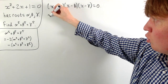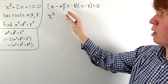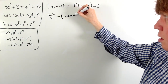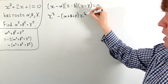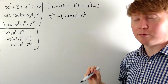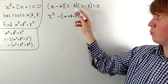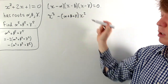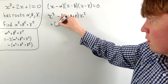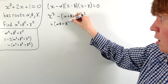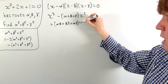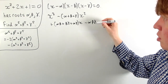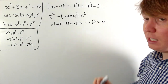Expanding the factored form, we get x cubed, minus the sum alpha plus beta plus gamma times x squared, plus the sum of pairs alpha beta plus beta gamma plus alpha gamma times x, minus the product alpha beta gamma, all equal to zero.